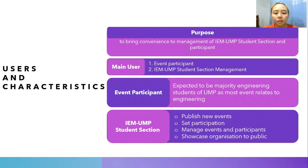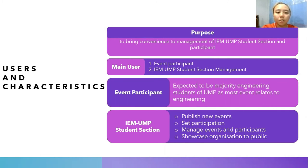For user characteristics, the purpose of this project is to bring convenience to the management of IEM-UMPSS and participants. It is anticipated that participants will visit and use the system to participate in events as frequently as two times a week, with the peak number of participants visiting and registering at the same time being a maximum of 20 and minimum of zero. The main users are event participants and IEM-UMPSS management. Event participants are expected to be mostly engineering students of UMP, while the session management can publish new events, set participation limits, manage events and participants, and showcase the organization to the public. That's all from me. Thank you.